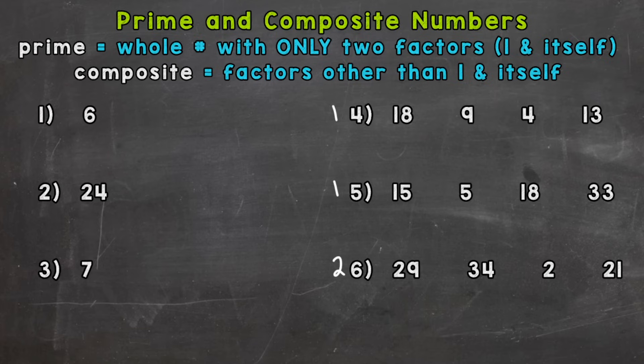So a prime number is a whole number with only two factors, one and itself. And we'll see what that means here in a second. And a composite number means that there are factors other than one and itself. And again, we'll figure out what that means here in a second.